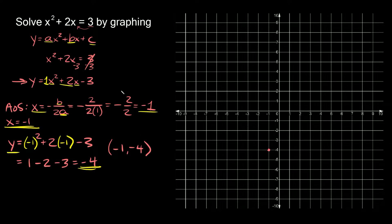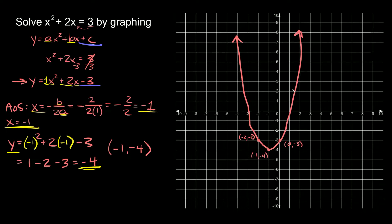To graph a parabola you need at least three points. The other point we can graph is the y-intercept, which is the last number — the plus c — so it's at negative 3. The parabola hits the y-axis at negative 3, so that's 0 comma negative 3. To get from the vertex to this point we go over 1 and up 1. To find a symmetrical point on the other side, we do the same thing — over 1 and up 1 — giving us a third point at negative 2 comma negative 3. Now we have our three dots and we can connect them.